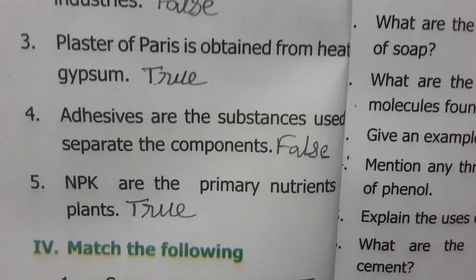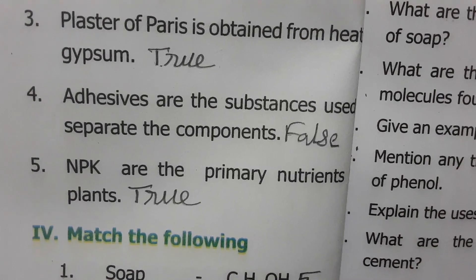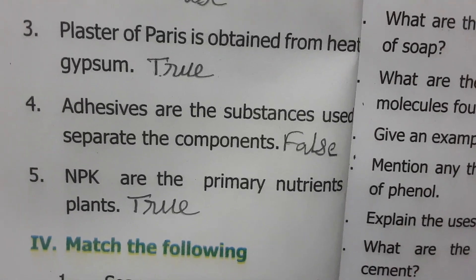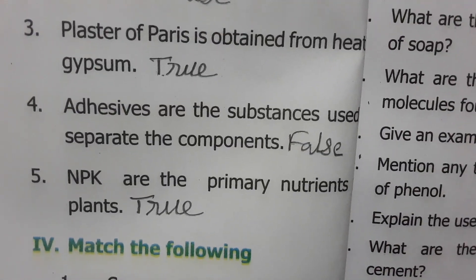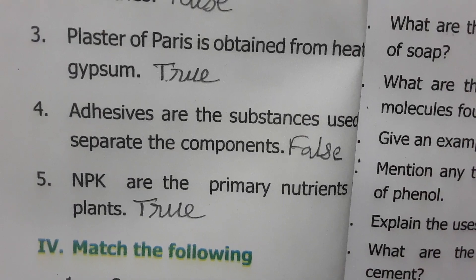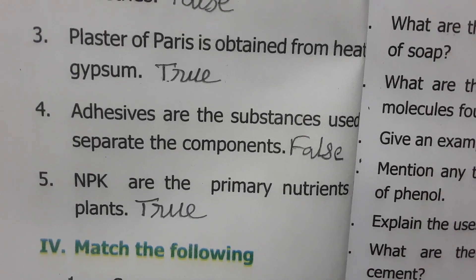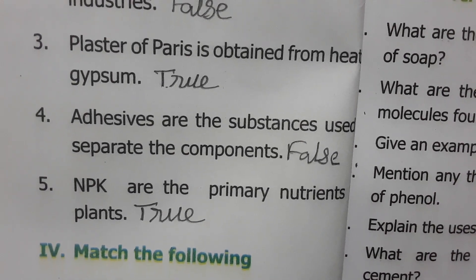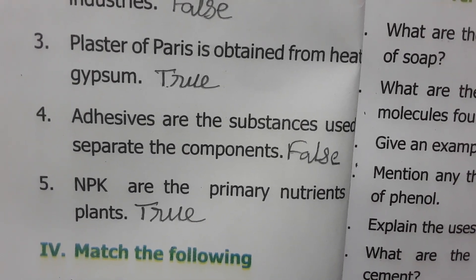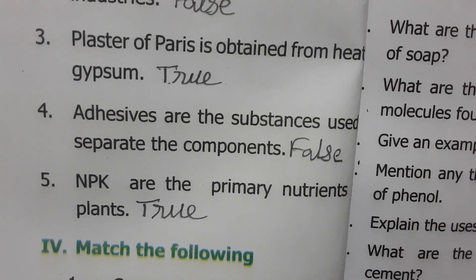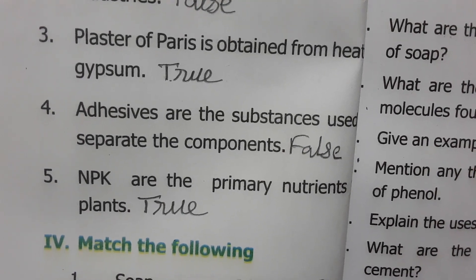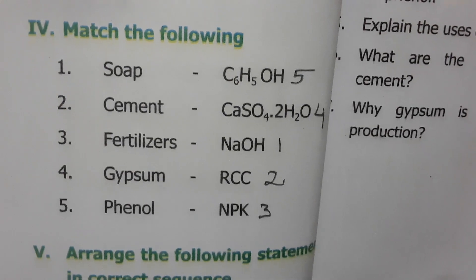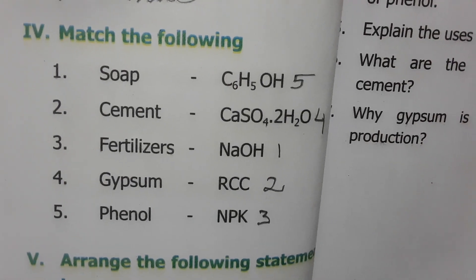NPK are the primary nutrients of plants — True, because NPK means nitrogen (N), phosphorus (P), and K stands for potassium. So nitrogen, potassium, and phosphorus are the primary nutrients in plants — True.